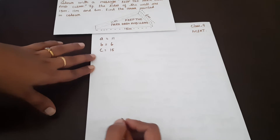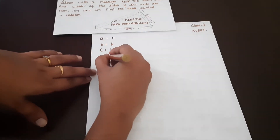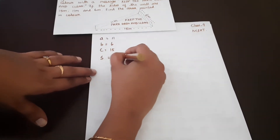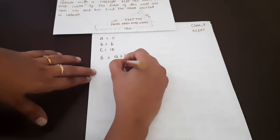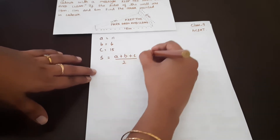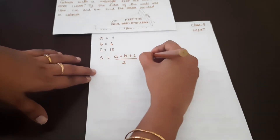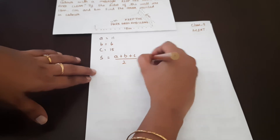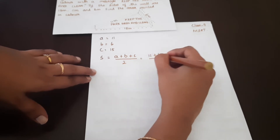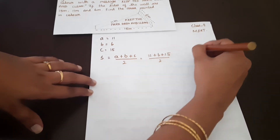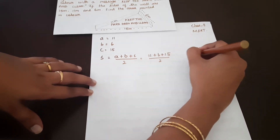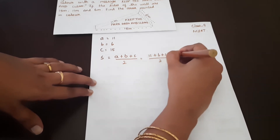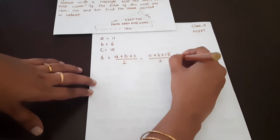Now we calculate the semi-perimeter. Semi-perimeter S is equal to A plus B plus C divided by 2. That is 11 plus 6 plus 15 divided by 2. 11 plus 6 is 17, plus 15 is 32. So S equals 32 divided by 2, which is 16.